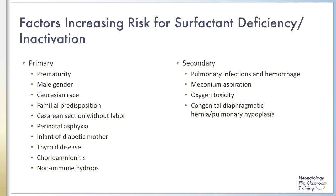Prematurity is the greatest risk factor for respiratory distress syndrome, caused by a deficiency of adequately functioning surfactant. Male gender is also a significant risk factor, along with Caucasian race. As early as 1976, national statistics data showing gender and race to be a risk factor for RDS were reported in Pediatrics. Familial disposition also plays a role in RDS, as well as cesarean section without labor.